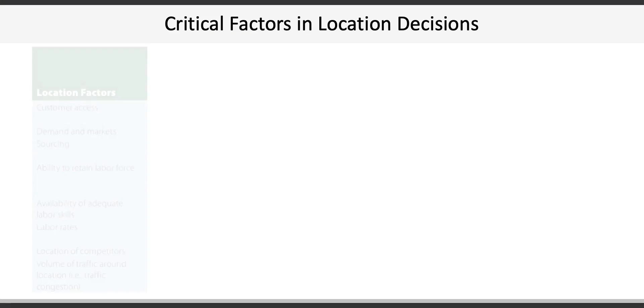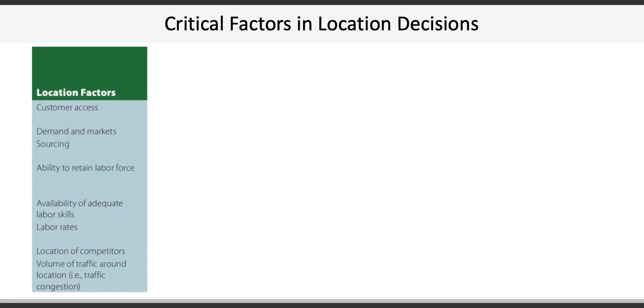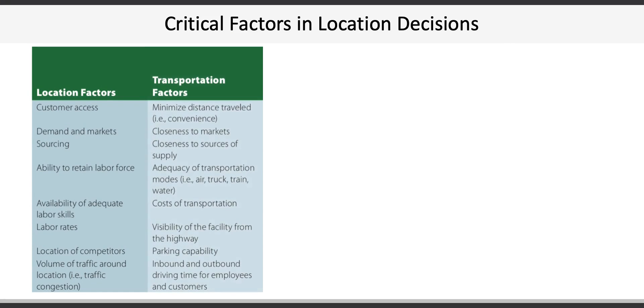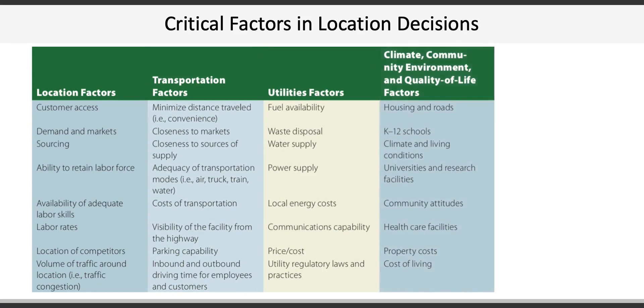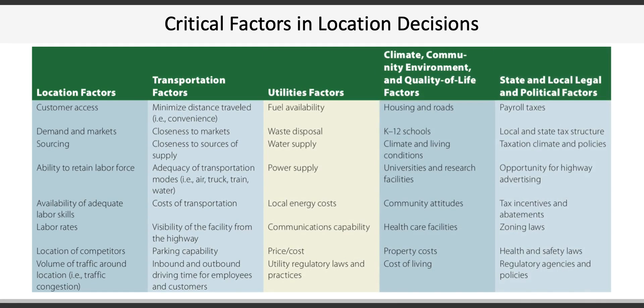The next concept in Chapter 6 revolves around location decisions. There are numerous factors to consider when making location decisions, such as location-specific factors, transportation, utilities, climate, community, environment, and state, political, and legal considerations. The location decision itself is hierarchical, starting at the global level and working down to the site level. At the global level, we ask which country should we go to — important considerations include time zones, foreign language, customs, tariffs, and other trade restrictions.